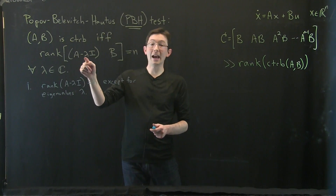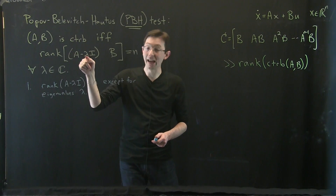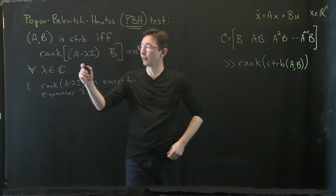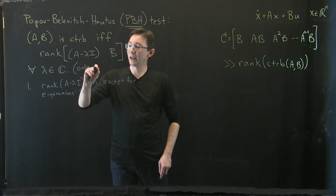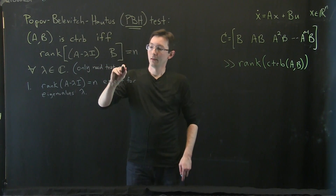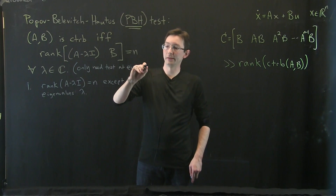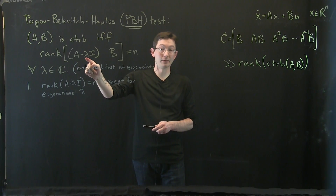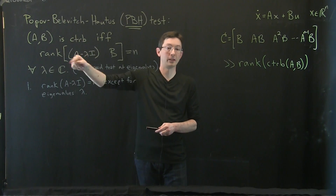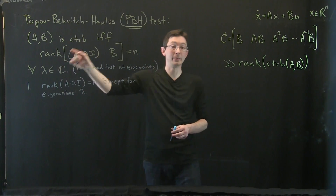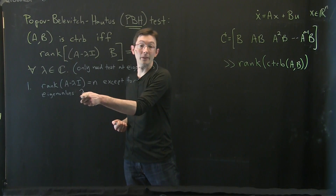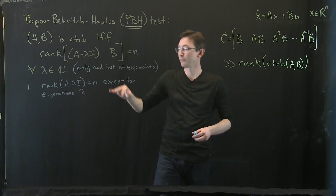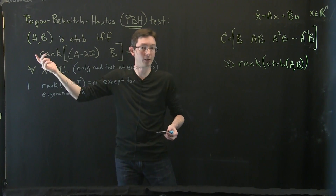Rank of A − λI equals n except at eigenvalues. What that means is that I only have to test the PBH condition at the eigenvalues of A. So although the condition says 'for all λ in the complex plane,' we only need to test at the eigenvalues — at most n of them. We went down from all of the complex plane, which would be really hard to test, to just testing this rank condition at all of our eigenvalues.